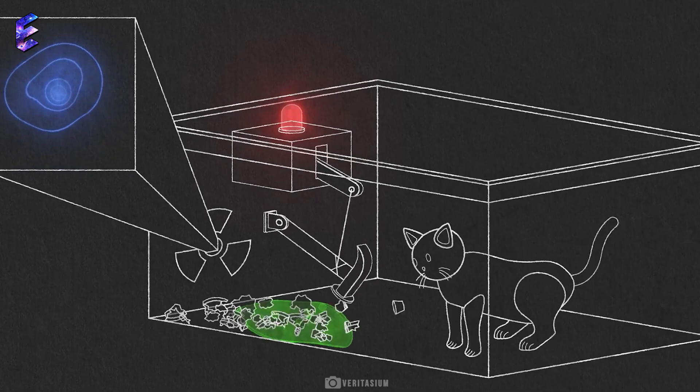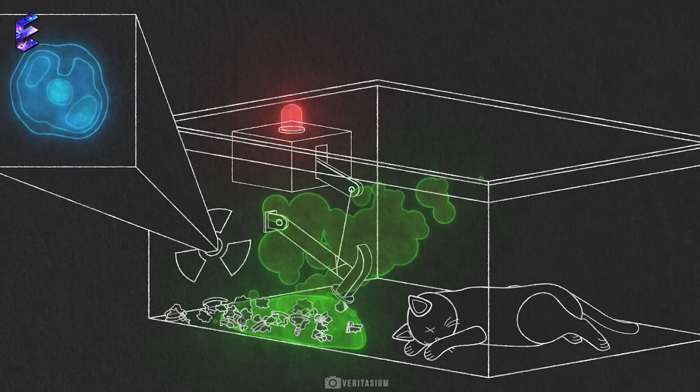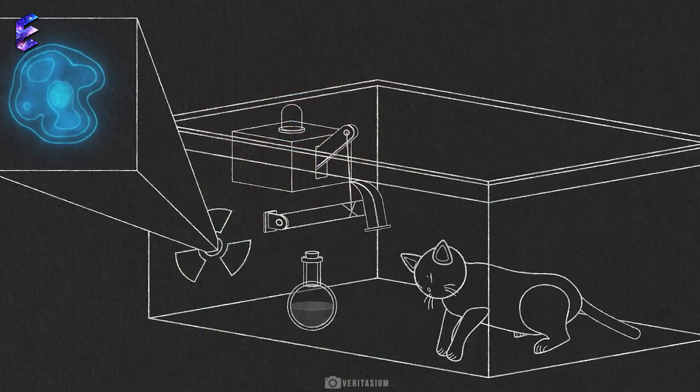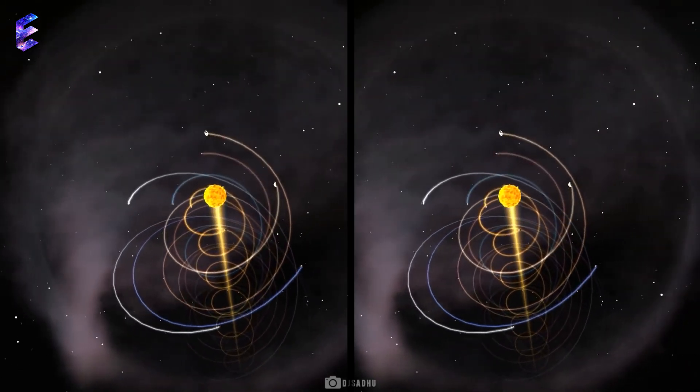In the many worlds interpretation of quantum law, the observer and the cat simply exist in two realities, one in which the cat is dead and one in which the cat is alive. Yes, two universes running parallel to each other.